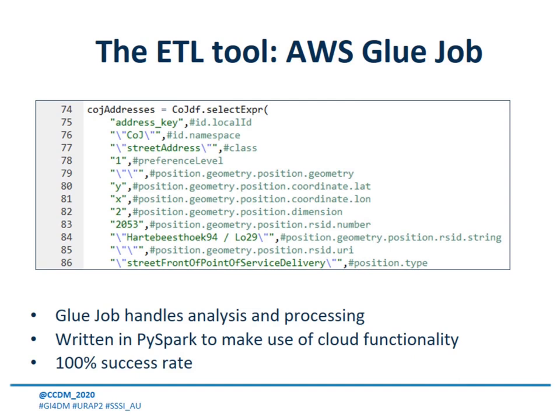The analytical functions of the tool are performed within AWS Glue jobs, making use of the PySpark scripting language. This is a combination of Python, which defines the code architecture, and Apache Spark, which extends it to include distributed data frames that operate on multiple cloud network nodes at once.